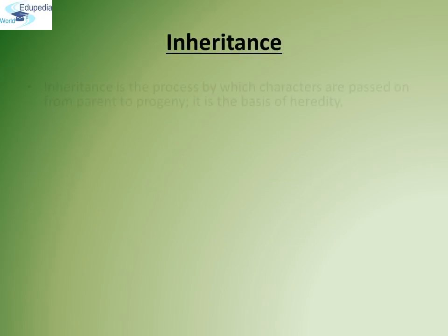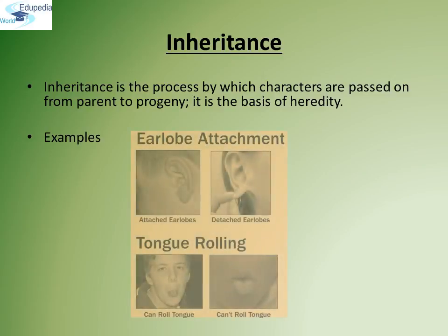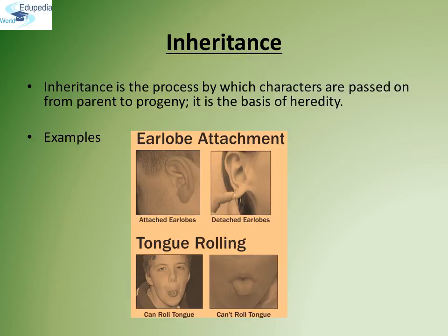What is inheritance? Inheritance is the process by which characters are passed on from parent to progeny. It is the basis of heredity. Examples include earlobe attachment and tongue rolling seen in humans. Some people have attached earlobes, some have detached. Some people can roll their tongue, some cannot.